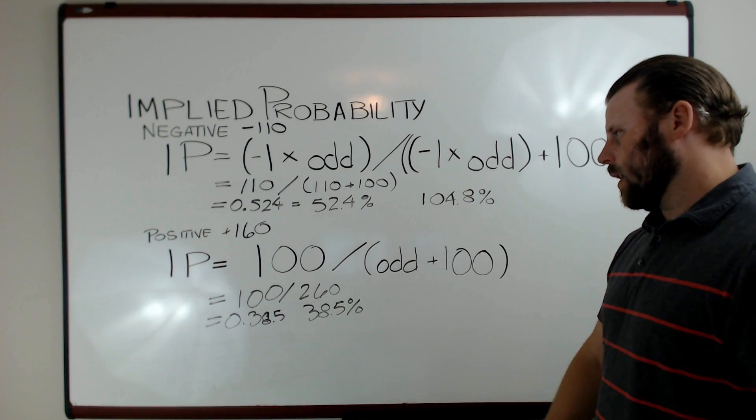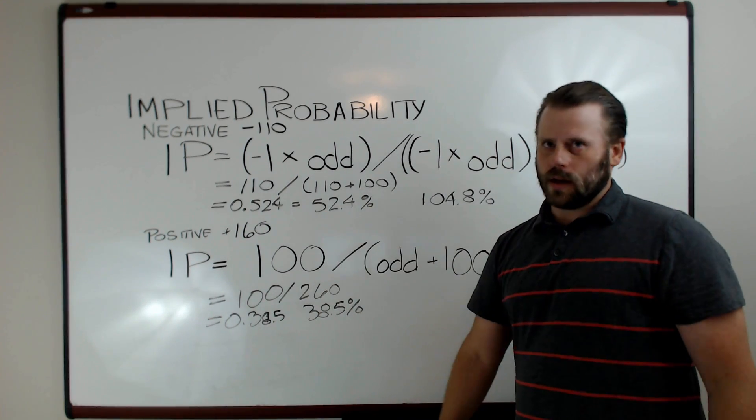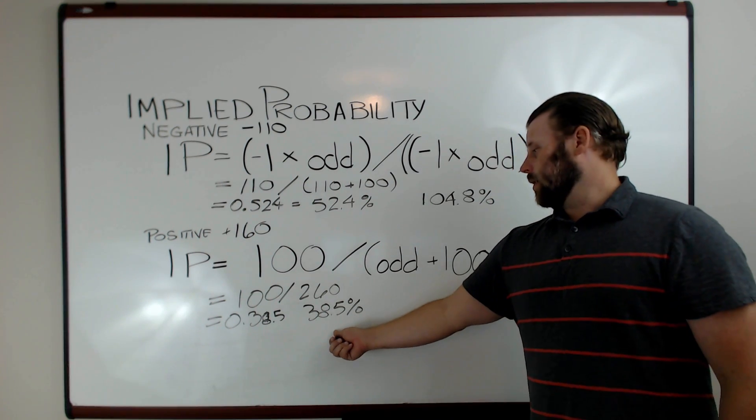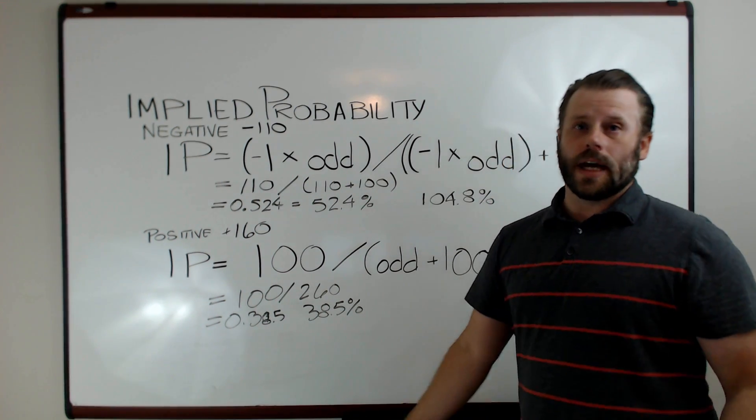Now, that makes sense. You're picking a dog. A hundred dollar bet is going to win you 160 dollars. So odds are good that the outcome is going to be less than 50 percent.